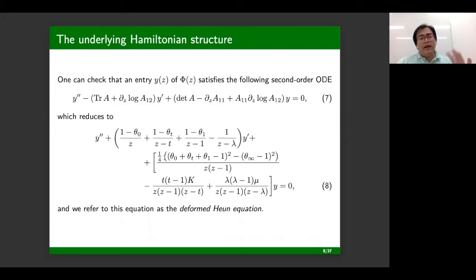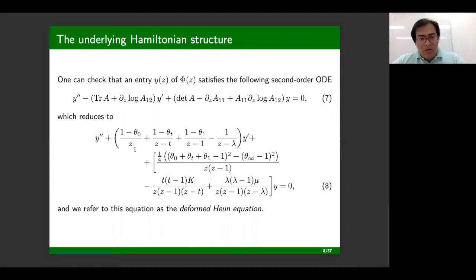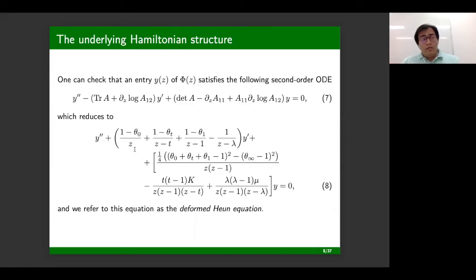But this is not the whole story. There is an underlying structure I will try to make manifest. If we analyze the second-order scalar equation for one of the entries of the fundamental matrix solution, we notice that it satisfies an equation which, after some massaging, reduces to what is called the deformed Heun equation, because it contains an extra singularity at lambda. In this case, lambda is an apparent singularity, so its characteristic exponents are integers and the monodromy around the apparent singularity is trivial.